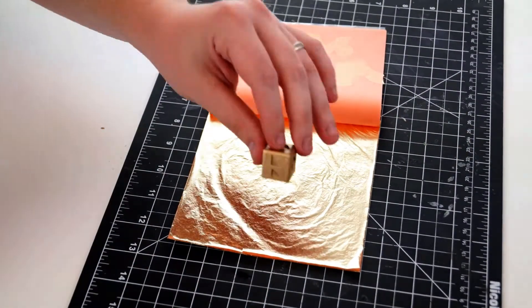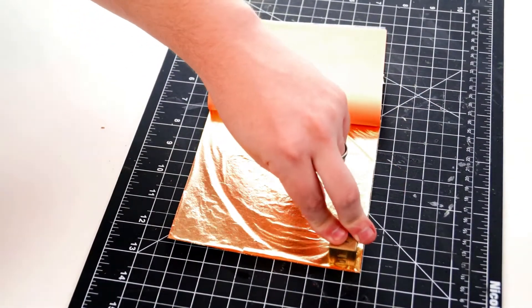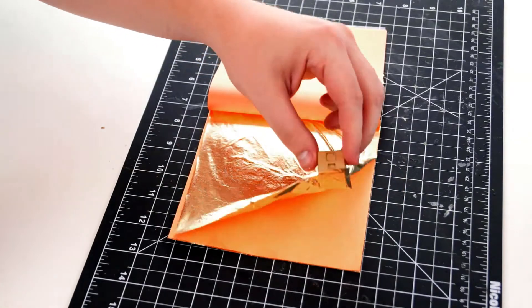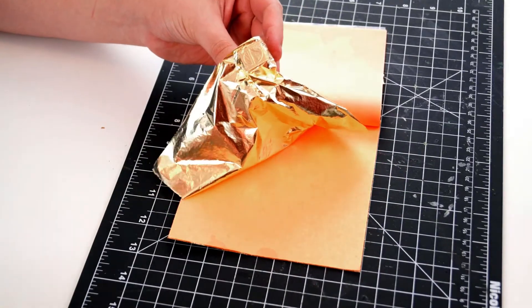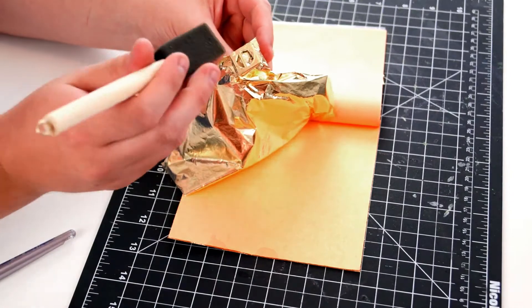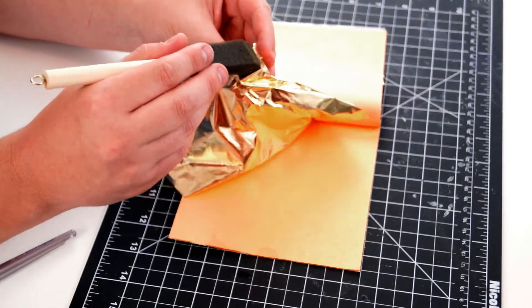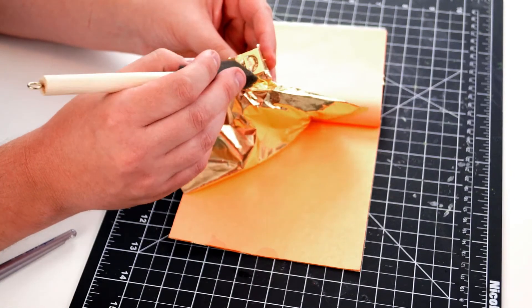Place the side with the sizing onto the gold leaf and press firmly. Use a clean brush to make sure the entire surface is pressed down firmly and smooth out if there are any wrinkles.